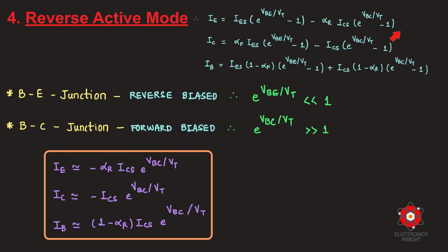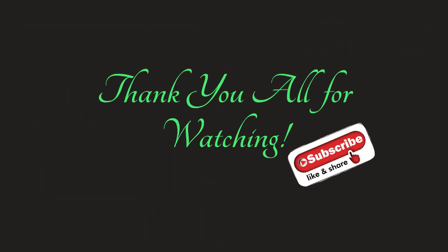In the reverse active mode, the base-emitter junction is reverse biased and the base-collector junction is forward biased. The exponential terms take a different form accordingly, and the final DC terminal currents for the reverse active mode of the NPN transistor are derived by applying the appropriate approximations to the general expressions.